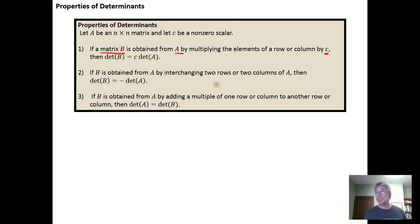So again, interchanging rows or columns was one of our three elementary row operations. And if B is obtained from A by adding a multiple of one row or column to another row or column, then the determinant of A is the determinant of B. So the third elementary row operation doesn't change the value of the determinant.